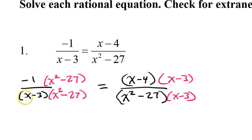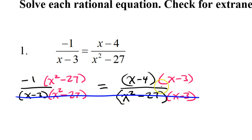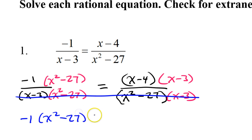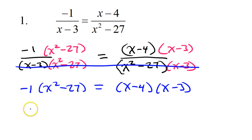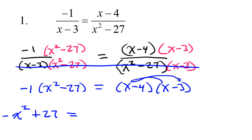Logic dictates that if the denominators are the same, then the numerators have to also be the same. So I'm going to ignore the denominators for the rest of the problem, and set the numerators equal to each other. What I have is negative one times x squared minus 27 is equal to x minus four times x minus three. Doing the distributive property, I have negative x squared plus 27 equals — you need to do the double distributive property. So, x times x is x squared.